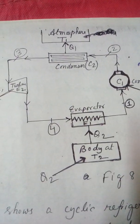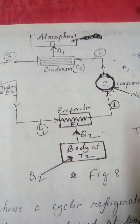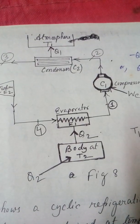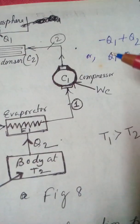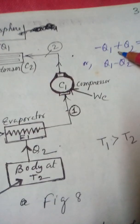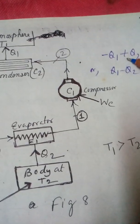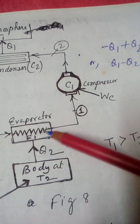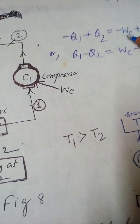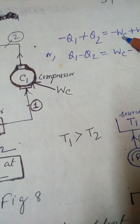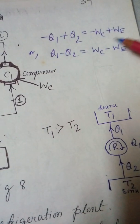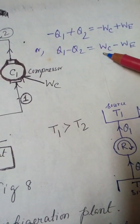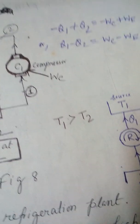So this is the full system. In this system, Q1 is taken out. So minus Q1 plus Q2 is equal to minus WC plus WE, meaning the net work is WC minus WE, and Q1 minus Q2 equals WC minus WE.